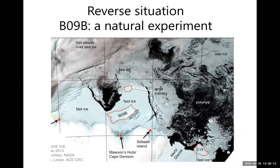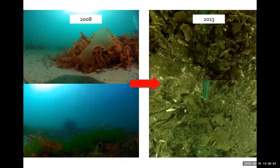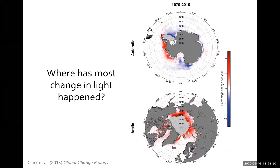We've also seen the reverse situation. We were lucky enough to be in Commonwealth Bay a few years ago. This used to be an area of Antarctica that was ice-free year round because of strong katabatic winds coming down from the coast. Then this massive iceberg B9B came along and got grounded there, and ever since it's essentially been fast ice year round. We've gone from a situation where it was ice-free year round to now ice-covered year round, and what we're seeing is large macroalgal forests currently in the process of dying and most likely transitioning into the invertebrate communities we see in other environments around Antarctica.